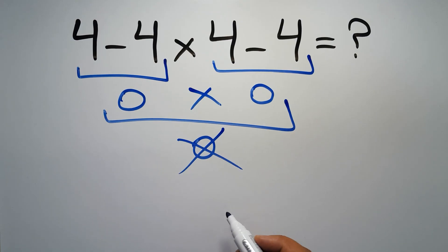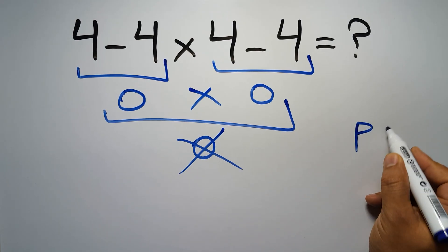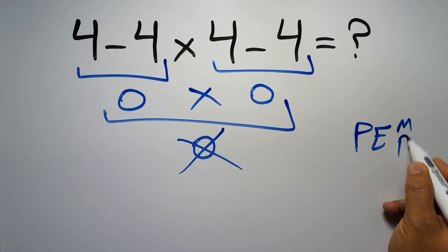Because according to the rule of operations, first we have to do parentheses, then exponents, then multiplication or division, and the final addition or subtraction.